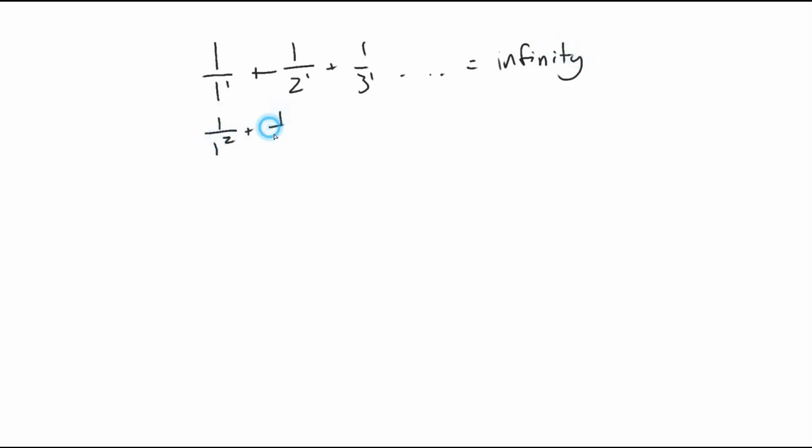But what's 1 over 1 squared plus 1 over 2 squared plus 1 over 3 squared dot dot? That is equal to pi squared over 6.